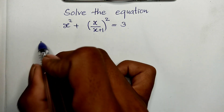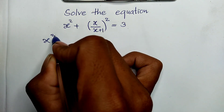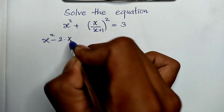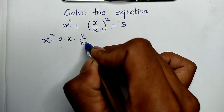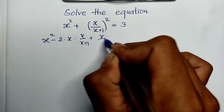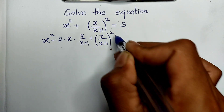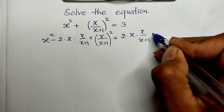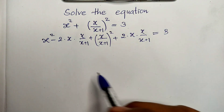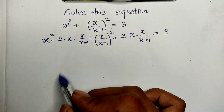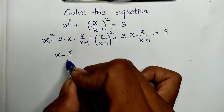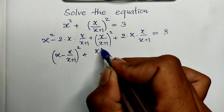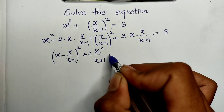I use this trick to rewrite the equation as a sum of squares. So I can write: h squared minus 2 times h times (h divided by h plus 1), plus (h divided by h plus 1) all squared, plus 2 times h times (h divided by h plus 1), equals 3. This simplifies to (h minus h divided by h plus 1) all squared, plus 2h squared divided by (h plus 1), equals 3.